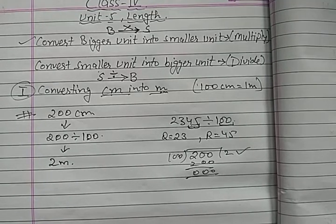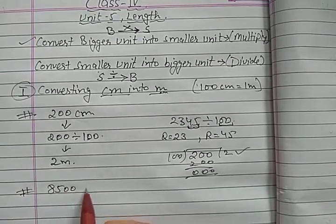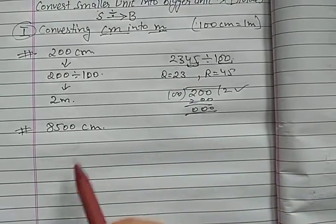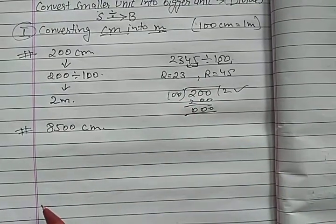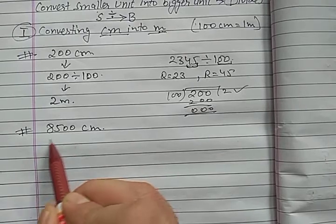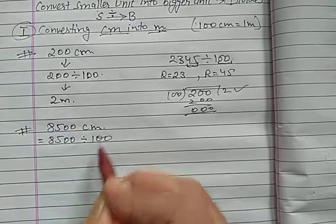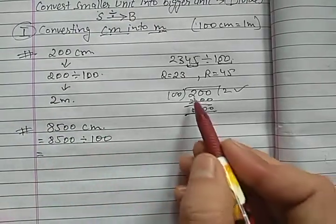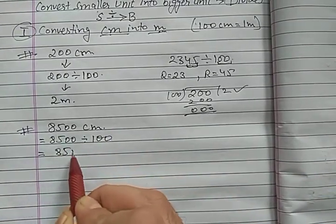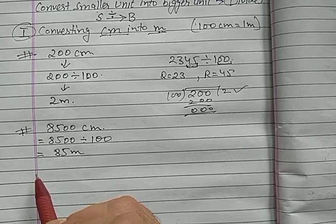Now let us take one more example: 8500 cm. Again, you have to convert this centimeter into meter — smaller unit to bigger unit. What do you have to do? We have to divide by 100. So divide it. Oral method से करिए, चाहे किसी भी method से करिए. We separate the last two digits. So 85 meters is the answer. In this way, we can convert centimeters into meters.